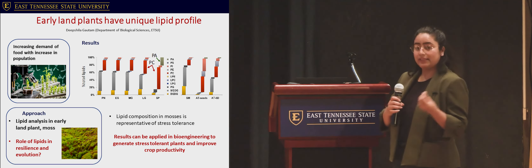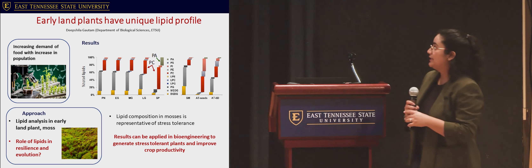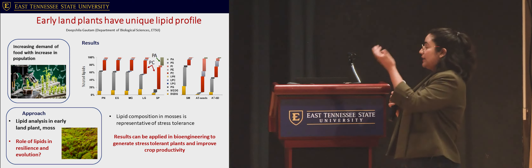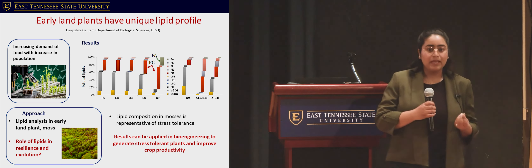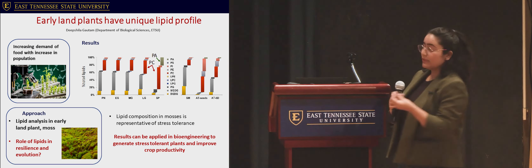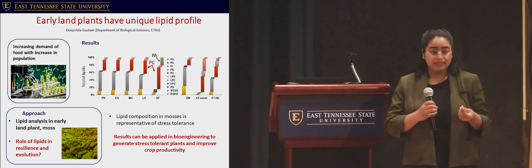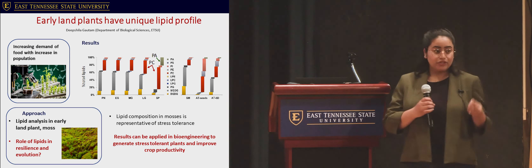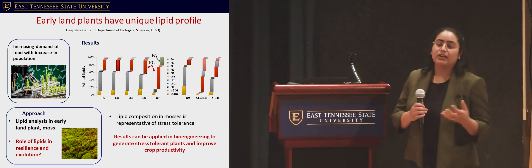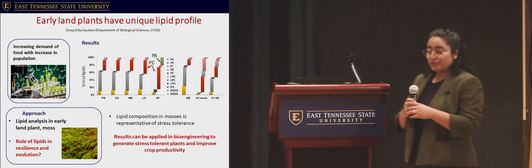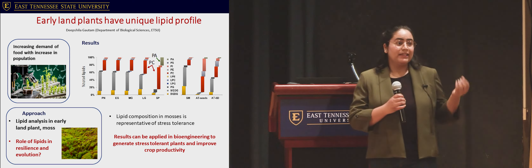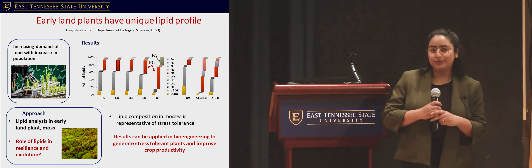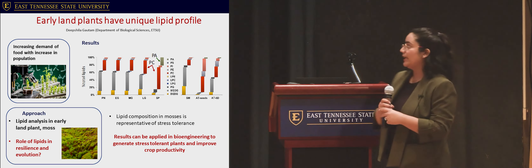So we studied membrane lipids in the moss. On the x-axis we can see five developmental stages of moss: protonema, early gametophore, mid-gametophore, late gametophore, and the reproductive stage, sporophyte. The y-axis represents the lipid composition of 11 different membrane lipids. Since these different membrane lipids are present in almost all animals and plants and only their composition varies, we also compared the lipid profile of moss with early vascular plants — Selaginella, indicated as SM — and late vascular and flowering plant Arabidopsis. What we found was that in moss, phosphatidylcholine and phosphatidic acid, two of the lipids, were significantly changing. We are studying further to determine the significance of these lipids in the stress tolerance and resilience of moss.